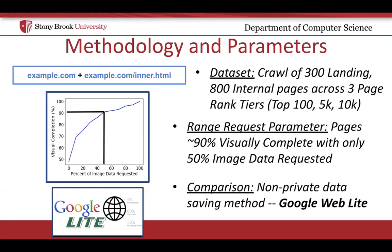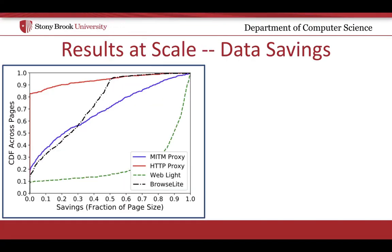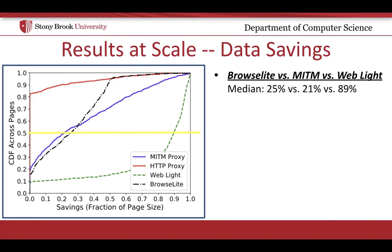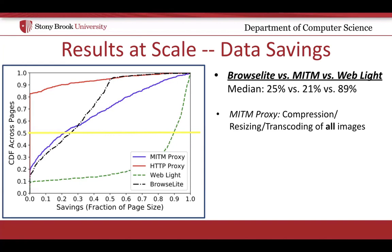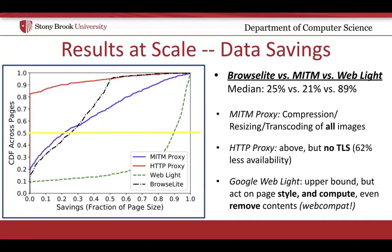Our results also compare to other possible approaches, such as man-in-the-middle proxy methods like Flywheel. For our first result, we compared the data savings across our crawls in terms of the fraction of the page size that was saved. The following CDF graph shows results across all pages for four alternatives: man-in-the-middle proxy approaches, plain HTTP proxy approaches, Google's WebLite service, and BrowseLite. We can see that for the median page, 25% of data is saved using the URL rewriting and range request components of BrowseLite. This is in comparison to 21% savings with man-in-the-middle proxies and 89% savings from Google WebLite. Plain HTTP proxies saw 62% less availability due to TLS and actually saved no data at the median. WebLite acts as an upper bound for savings but cannot transform personalized contents and introduces the potential for page breakage.